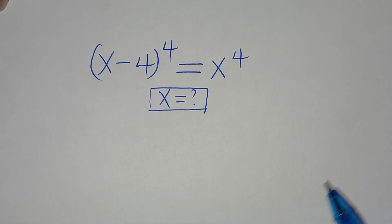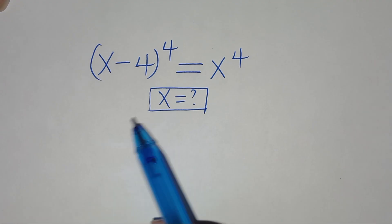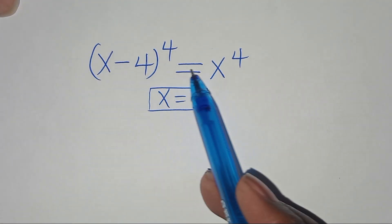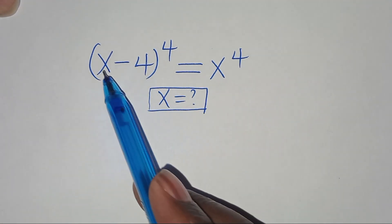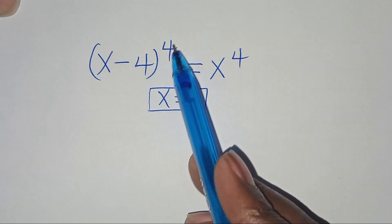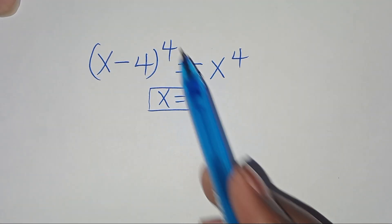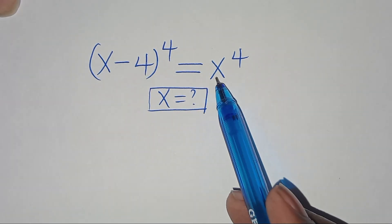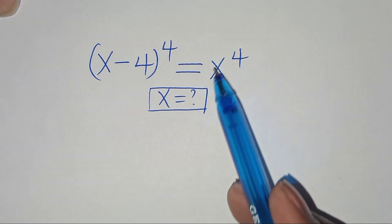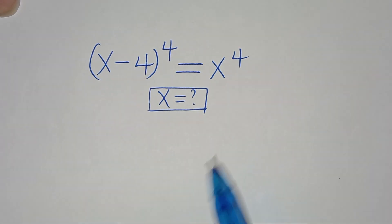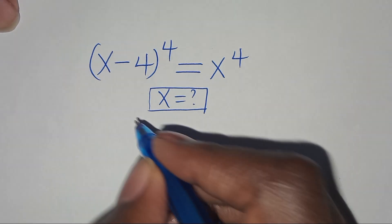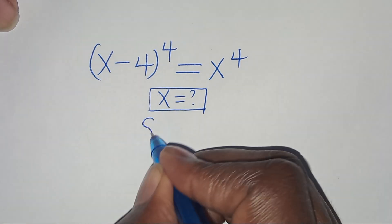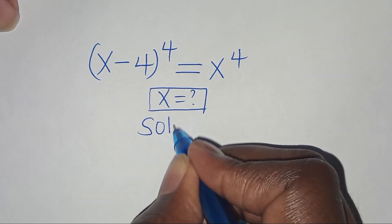Welcome, everyone. We're going to solve this algebra problem: (x minus 4) raised to the power 4 is equal to x to the power 4. What is the value of x? Let's present a solution here.